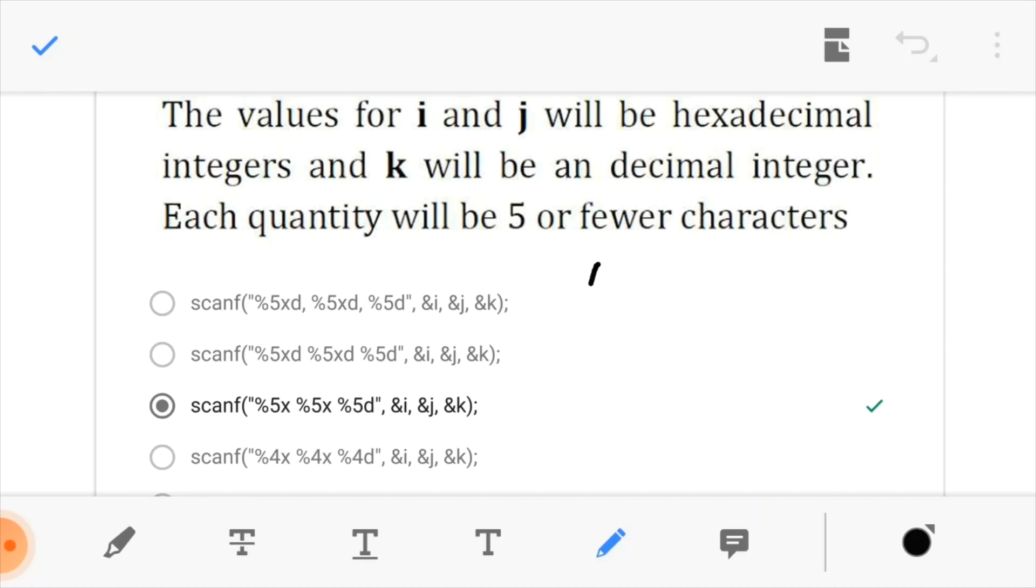And since this one says that we want each quantity to be five letters or fewer, then we have to set our minimum field width to five. Because if it exceeds five, it will cut. And if it is less than five, it would fill the remaining ones with zeros.